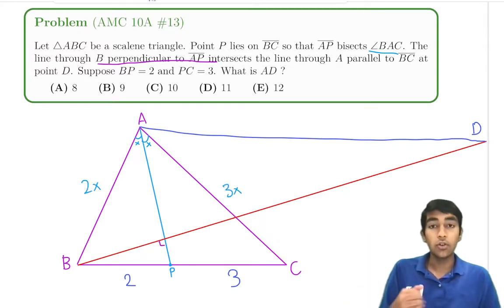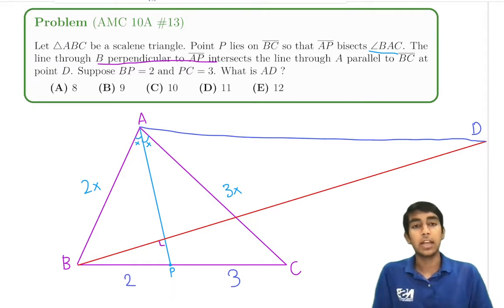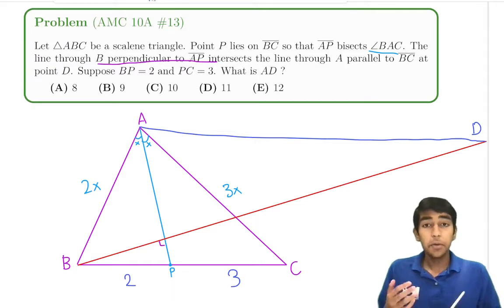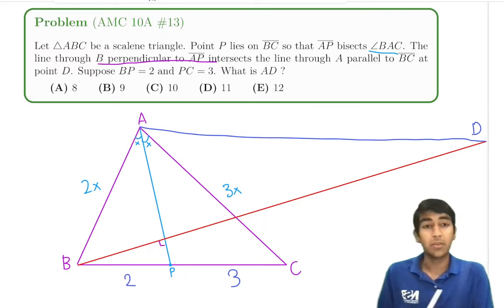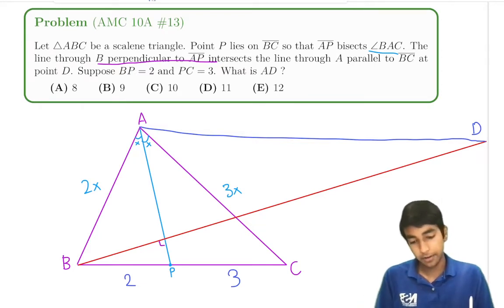So that 2X to 2 is X, and 3X to 3 is X as well. And the reason we do this is because then instead of having to deal with X and 1.5X and something like that, we get to deal with integer numbers. This is something we know from the angle bisector theorem.